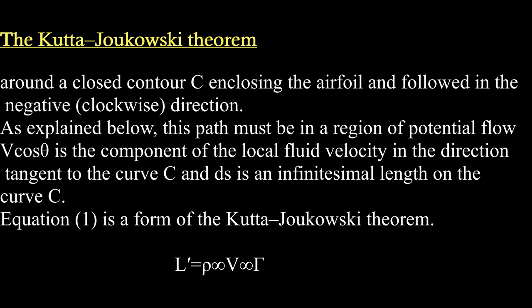As explained below, this path must be in a region of potential flow and not in the boundary layer of the cylinder. The integrand V cos θ is the component of the local fluid velocity in the direction tangent to the curve C, and ds is an infinitesimal length on the curve C.